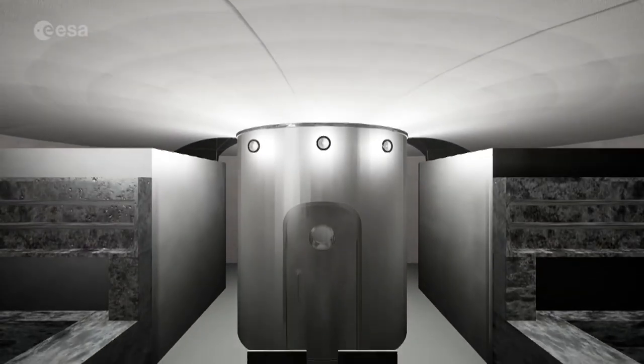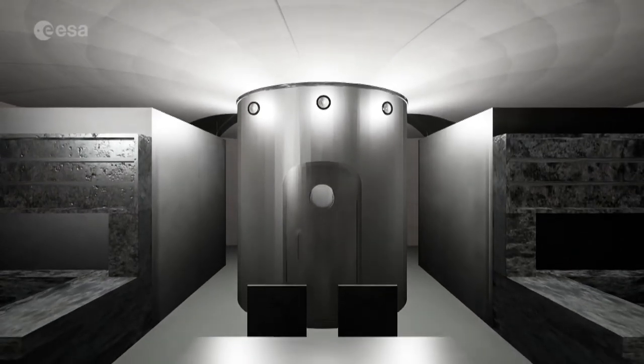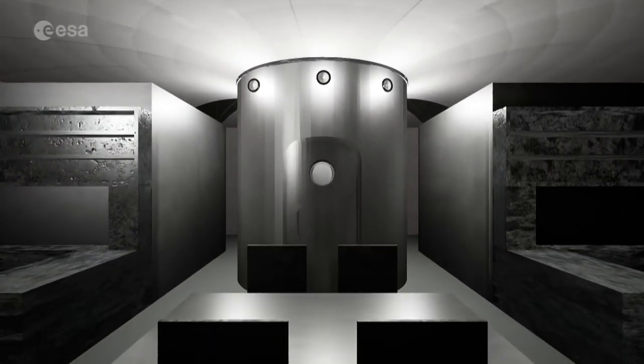The sleeping pods and living quarters are located in the bottom module, where maximum radiation protection is provided. Here there is also space for the lunar gym.